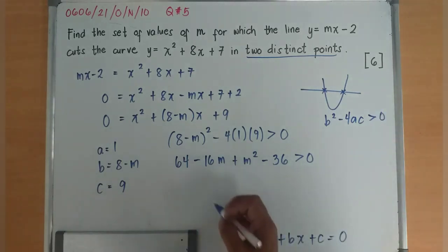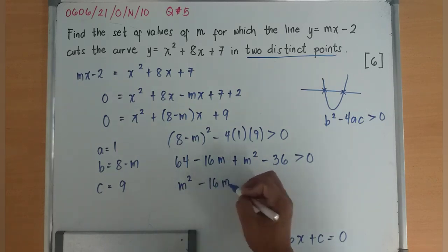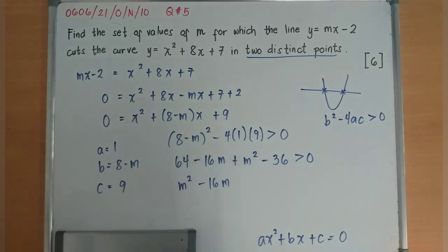Next, to simplify this, I'll have m² minus 16m. 64 minus 36, 64 minus 36 is 28.